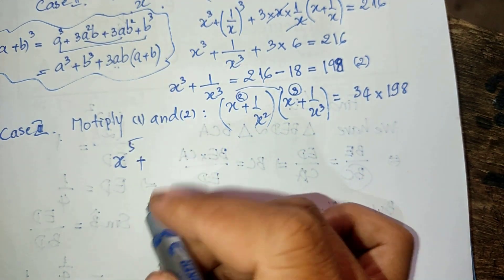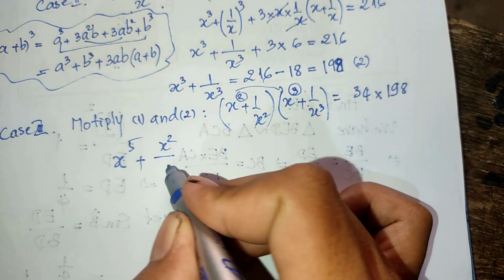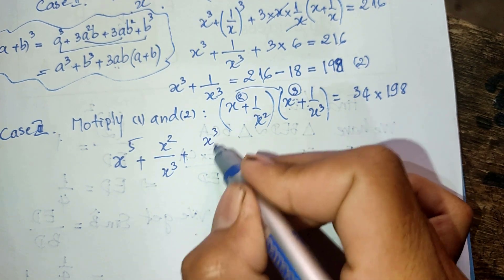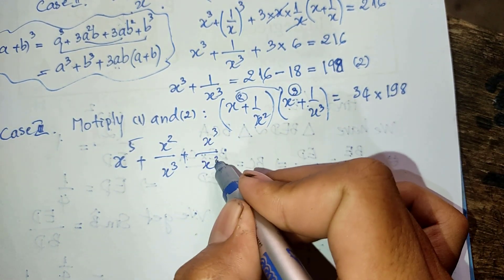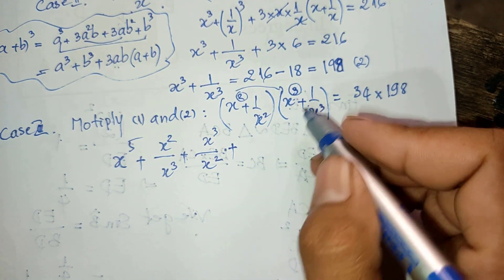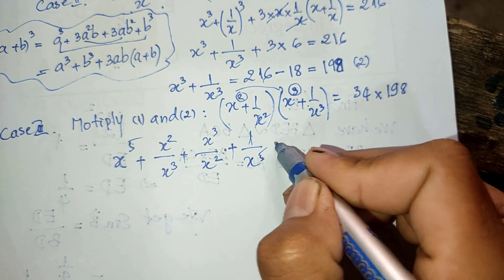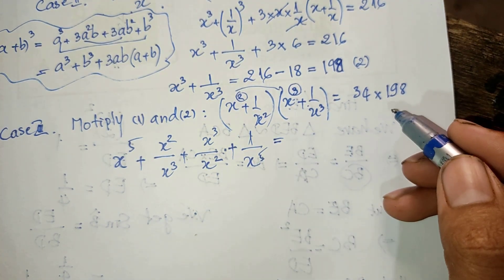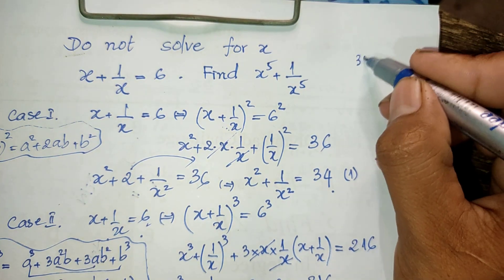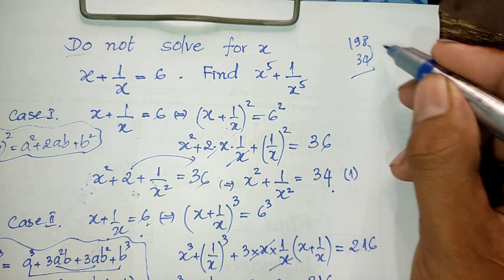Expanding the product, h to the power two plus three equals h to the power five, and the cross terms give h squared divided by h cubed and h cubed divided by h squared, plus one divided by h to the power five. So we get h to the power five plus one divided by h to the power five plus the cross terms. Multiplying 34 by 198 gives 6732.